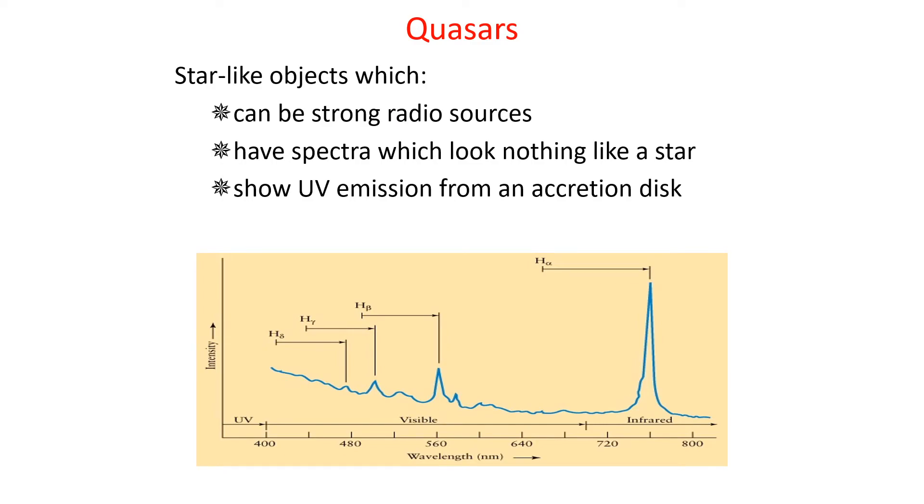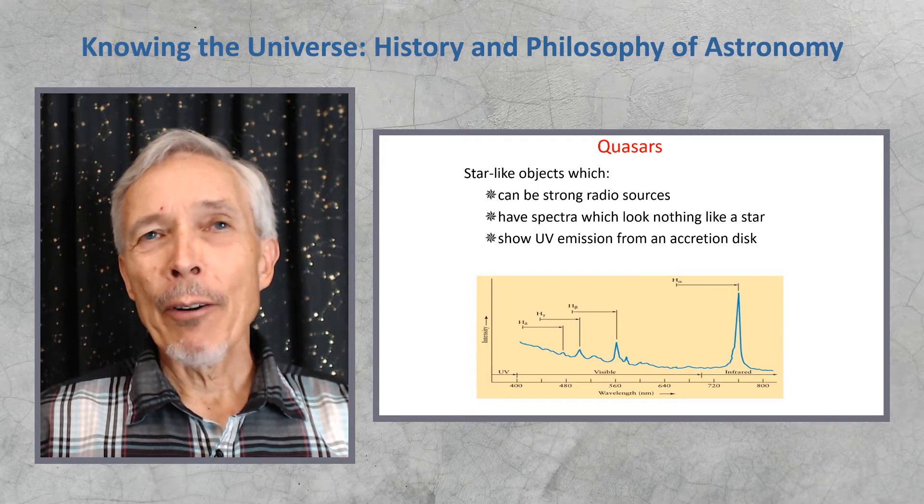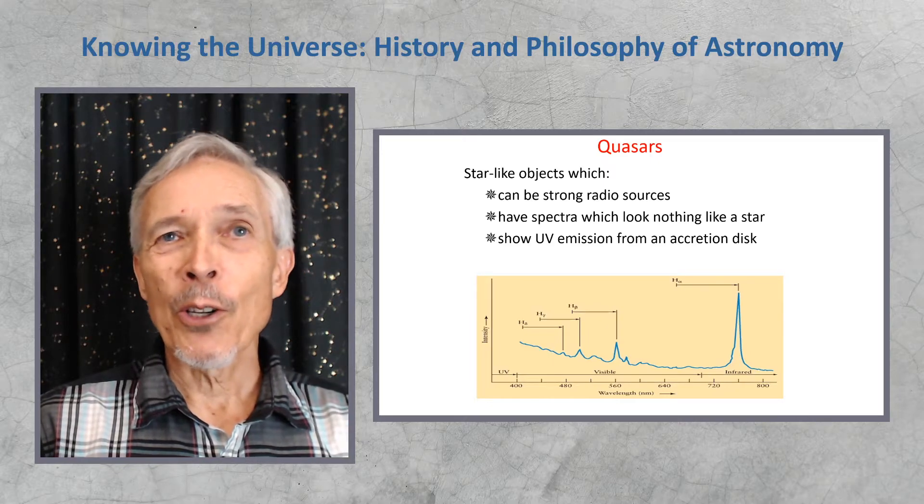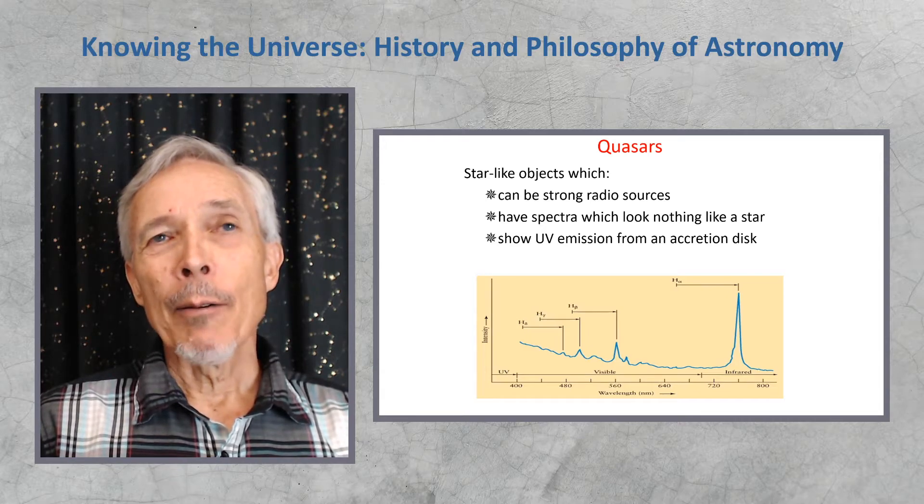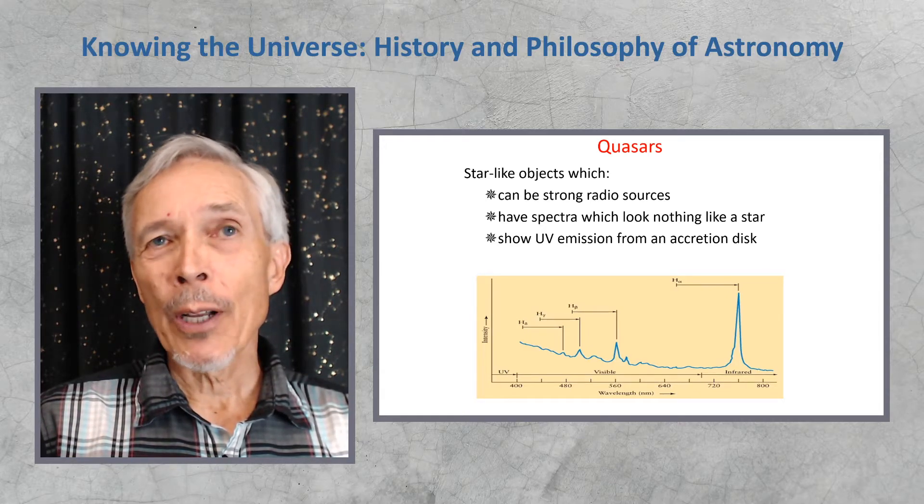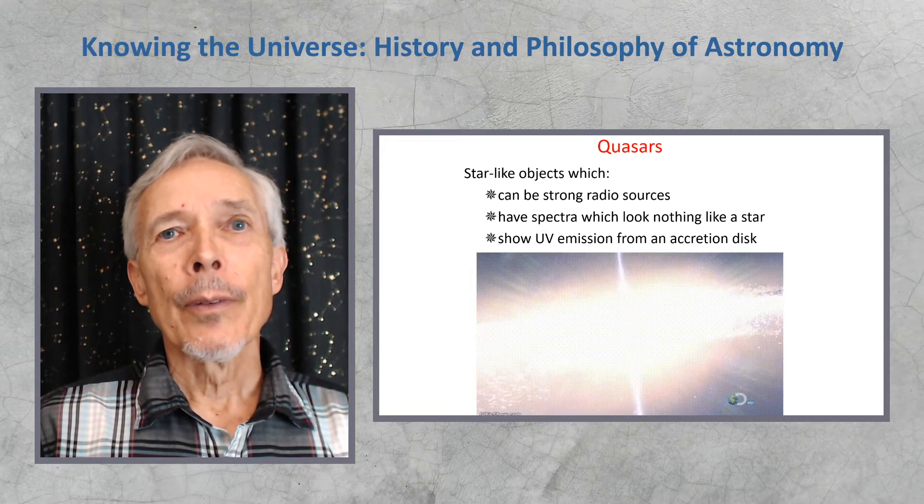So we have quasars, star-like objects which can be strong radio sources, and which have spectra that look nothing like a star. They were named quasars, which is an abbreviation for quasi-stellar radio source, because people found a set of radio sources at very great distances from the Milky Way, which looked like stars in the sky. Again, stars don't emit radio waves, so we knew there was something else going on. And when spectra were taken, it was finally seen that they were compact sources at the center of normal galaxies, at large distances, and incredible luminosities. Gravity engines.